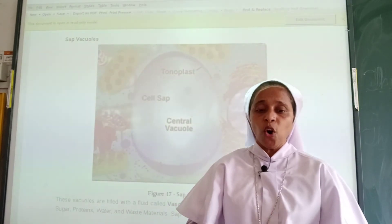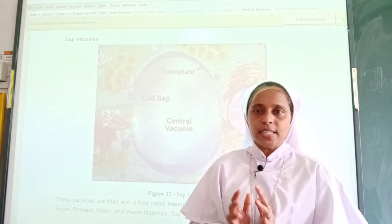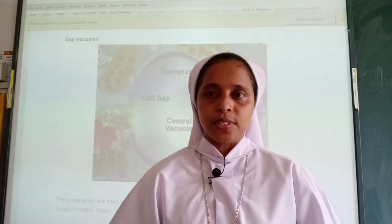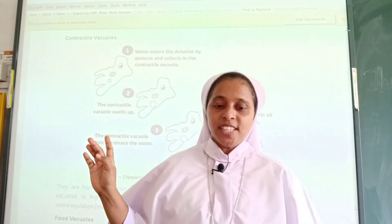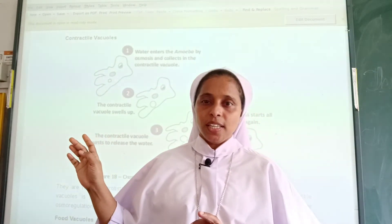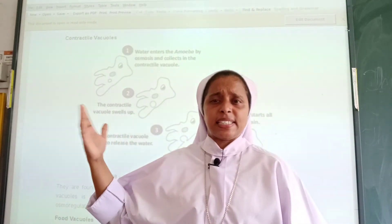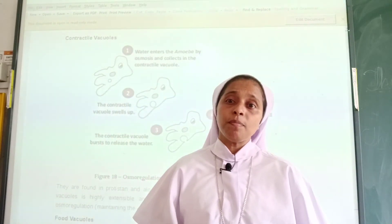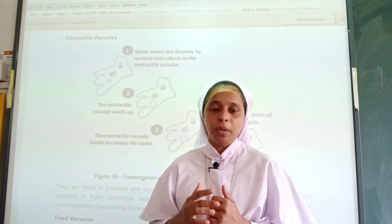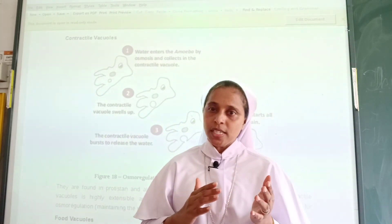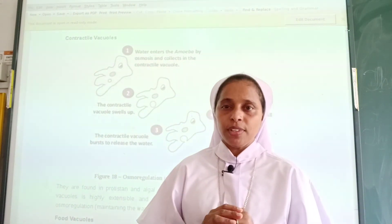In mature plants, the small vacuoles combine to form a single, central, large vacuole. Next, contractile vacuoles are found in protistans and algal cells in fresh water. The membrane of contractile vacuoles is highly extensible and collapses very fast. These vacuoles are responsible for osmoregulation — maintaining the water content inside the cell as well as excretion.